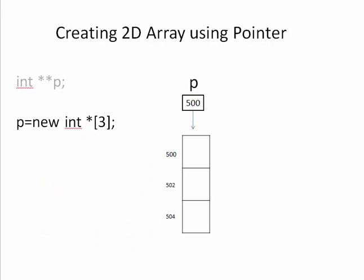Here I am not going to declare a 2D array directly, but we will see how to create a 2D array using the heap dynamically. Using a pointer I am creating a 2D array in heap. The first statement is: P = new int*[3]. So this is an integer pointer array of size 3 — an array of integer pointers. The base address of this array of pointers is stored in P, and P is a double pointer.